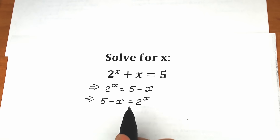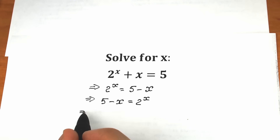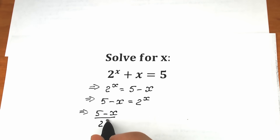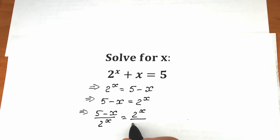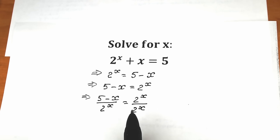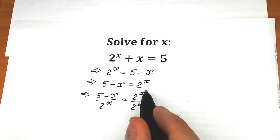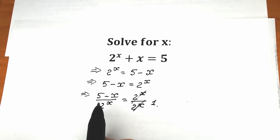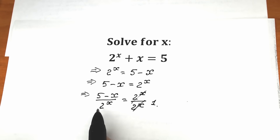Now let's divide both sides by 2 to the power x. On the left side we have 5 minus x divided by 2 to the power x, and on the right side 2 to the power x divided by 2 to the power x gives us 1. So the right side is just 1. Now on the left side, let's bring 2 to the x from the denominator to the numerator.